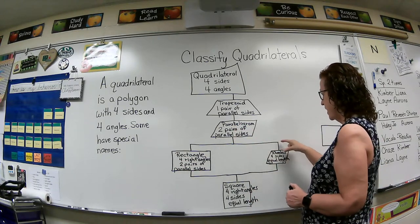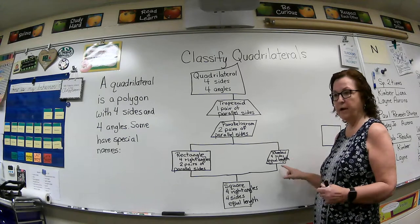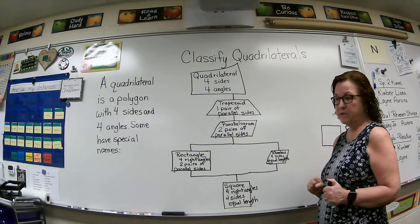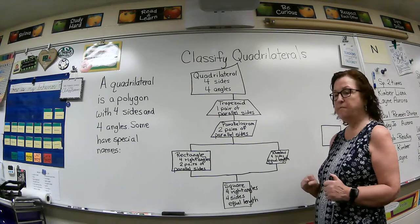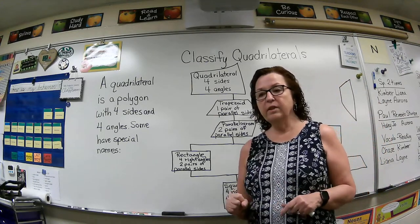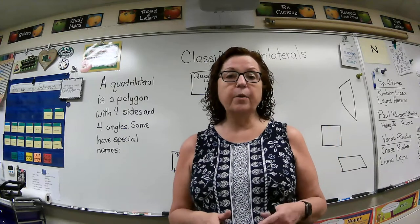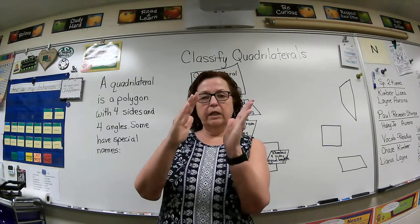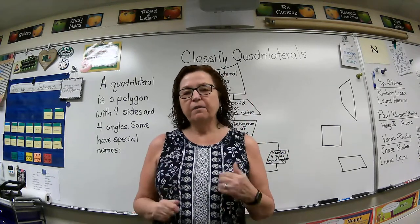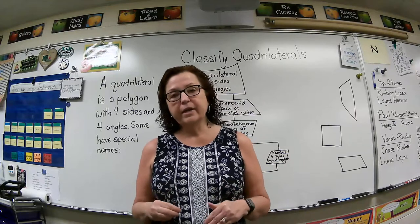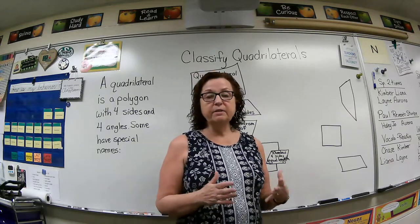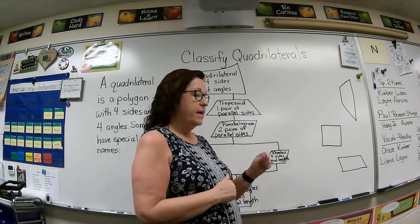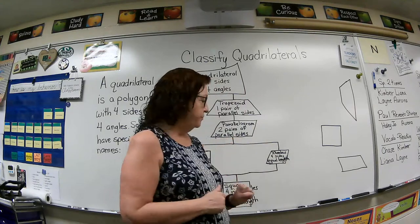Over on this side, because it's also a parallelogram with opposite sides parallel, is a rhombus. What's interesting about a rhombus is it has four sides of equal length — it's kind of like a square because a square has four sides of equal length. But it is usually leaning, so it doesn't have the four right angles that a square does. A rhombus is a parallelogram with four sides of equal length.